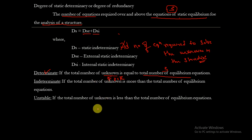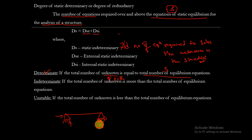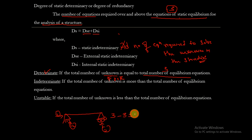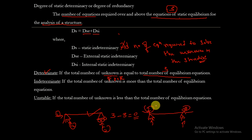For instance, consider a simply supported beam with a roller. The reactions developed give three unknown forces. With three equilibrium equations, 3 minus 3 equals zero — this structure is determinate. Now, suppose we have a beam with two simply supported ends, giving four unknowns. Four minus three equals one, so this structure is indeterminate to the first degree.